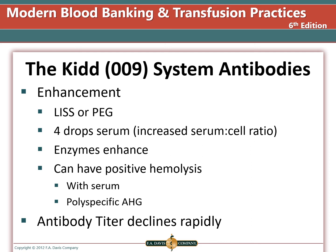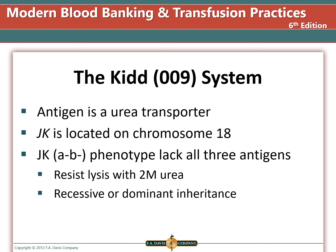The Kidd antibody titer declines quickly in vivo — a strong reacting antibody may show no reactivity only a short time later. Kidd antigens are urea transporters; the gene is on chromosome 18. The JKa-negative, JKb-negative phenotype lacks all three antigens, and these cells resist lysis with 2-molar urea. This null phenotype can be inherited in both recessive and dominant patterns.